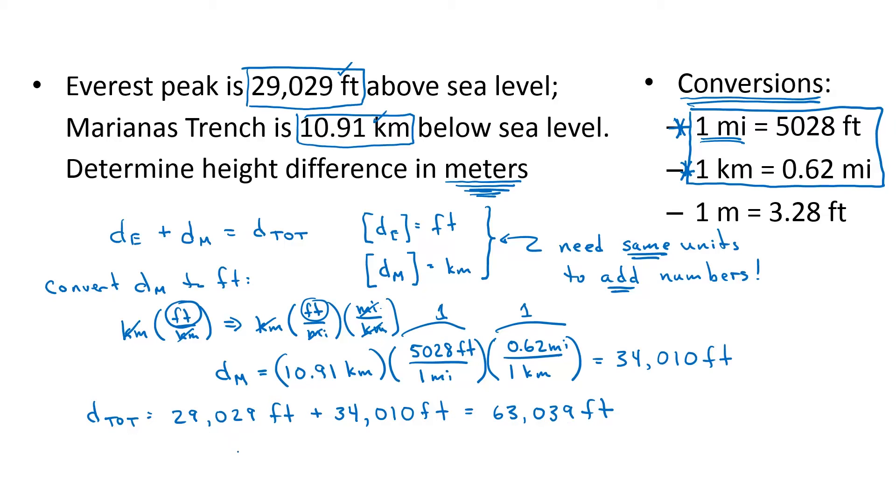Now I just convert this number to meters, 63,039 feet. I want to multiply 1 with units of meters per feet. I can get that from this third conversion factor. Dividing both sides of that by 3.28 feet, I get 1 meter over 3.28 feet. So now the feet cancel, it's left with meters. That turns out to be 19,219 meters is the total distance, D tot.